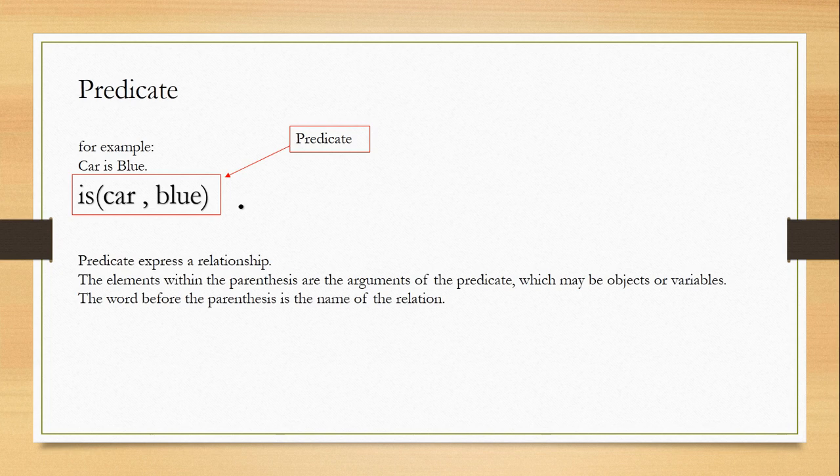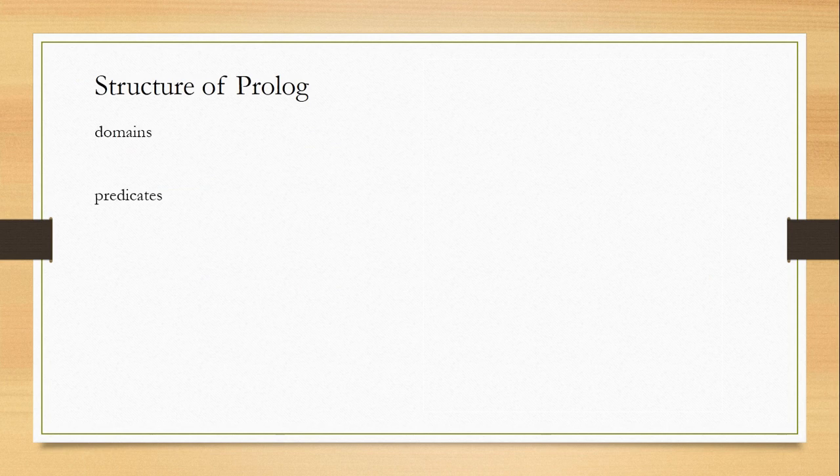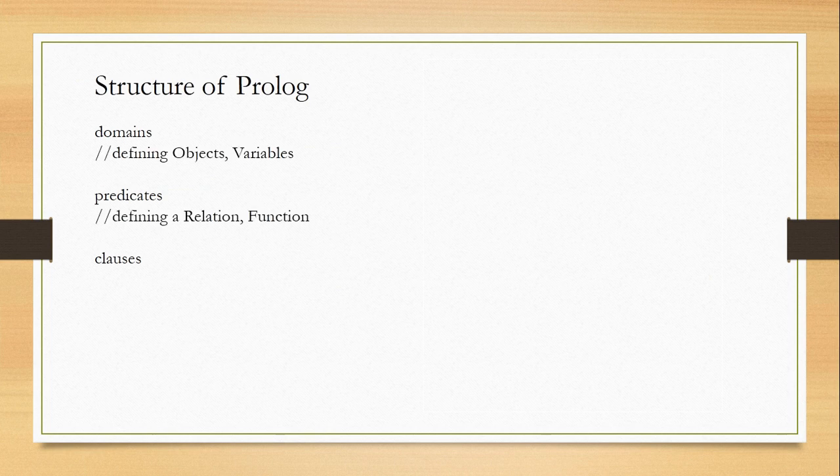This is simple. Now we're going to the very last topic, called the structure of Prolog. The Prolog structure has three different parts: head and body parts. The Prolog structure has three parts: first is domains, second is predicates, and last is clauses. You need to maintain this sequence. In domains, you can declare objects or variables. In predicates comes the relation or functions which you have to define. In clauses, you have facts or rules which you have to denote.